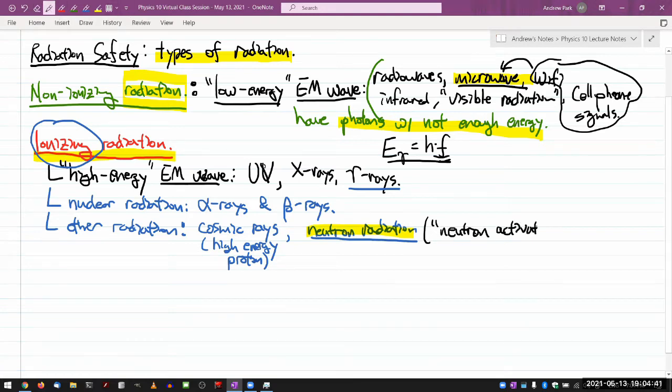If you're looking for a phrase to Google search, you can look up neutron activation. This is one of the rare circumstances where exposure to radiation actually causes something to be radioactive. With alpha, beta, gamma, and X-rays, exposure to those things don't cause things to become radioactive. But neutron radiation can cause things to become radioactive through the process called neutron activation.